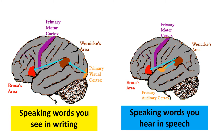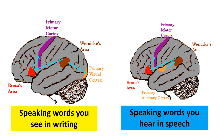Here are two simple illustrations of what happens when you want to speak words you are seeing in writing, and when you hear speech and want to say it back. On the left, you're reading something and want to speak it. On the right, you hear some speech and want to repeat it — that involves the temporal lobe for hearing and processing the sounds, then Wernicke's area, then Broca's area, and then the motor cortex for speaking.